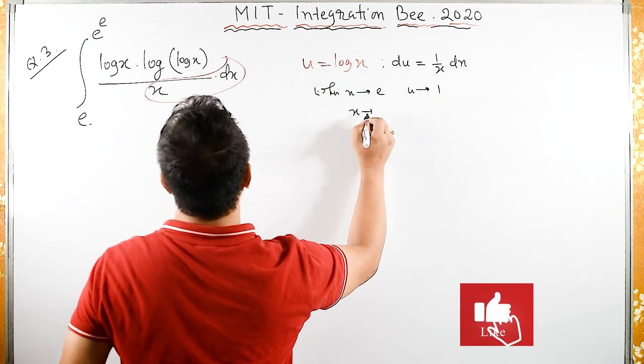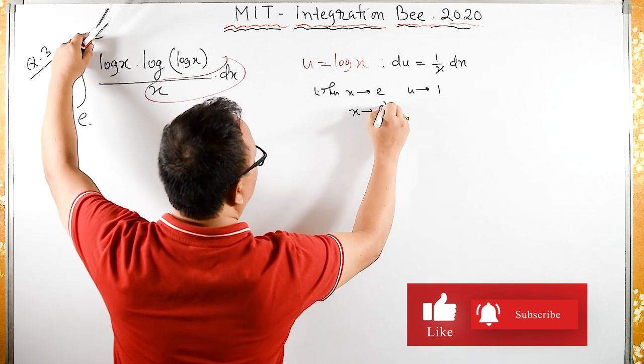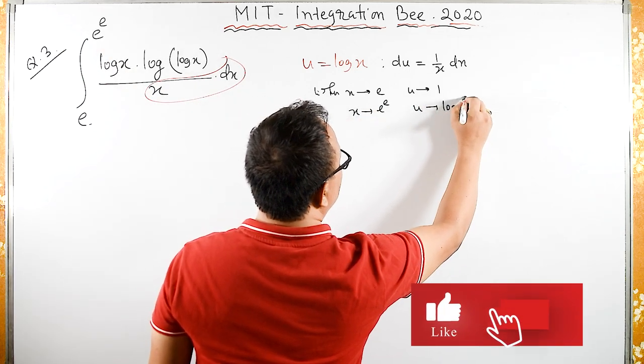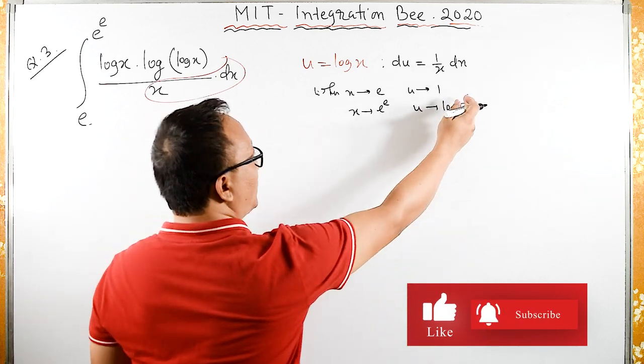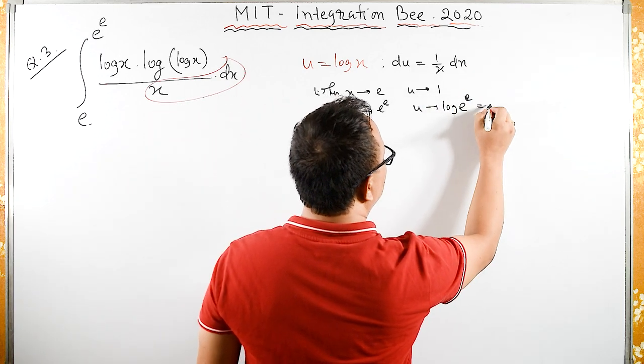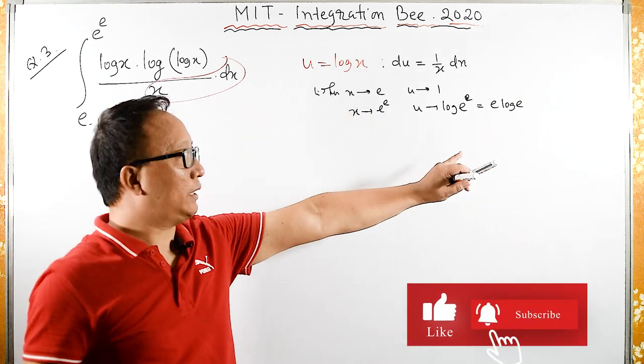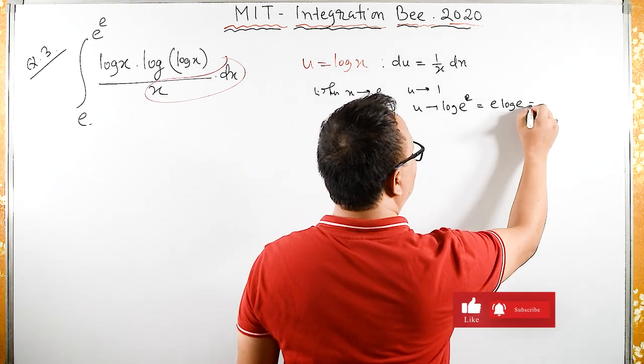And when x equals e raised to e, then u equals log of e raised to e. We can bring down the exponent, so it's e times log e. Since log e is 1, u equals e.